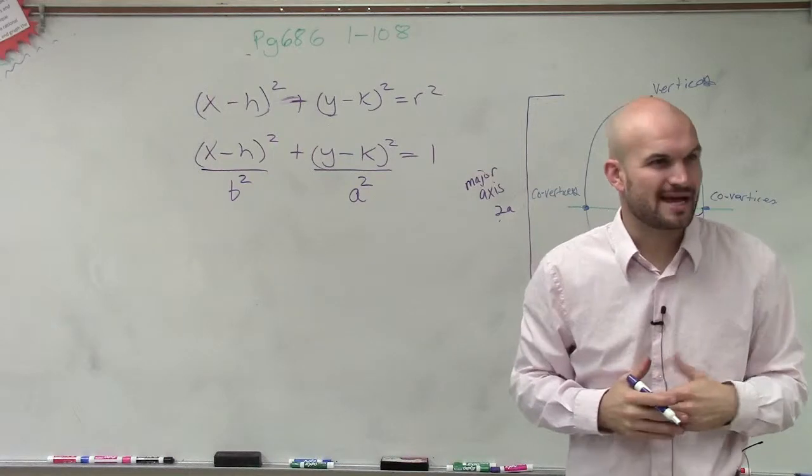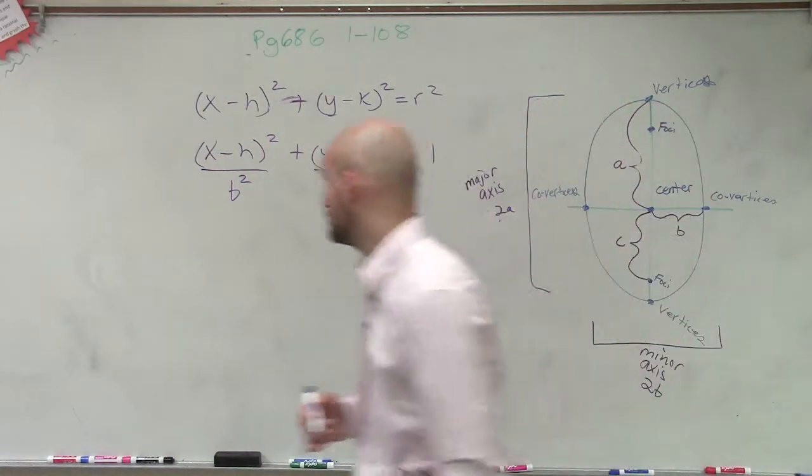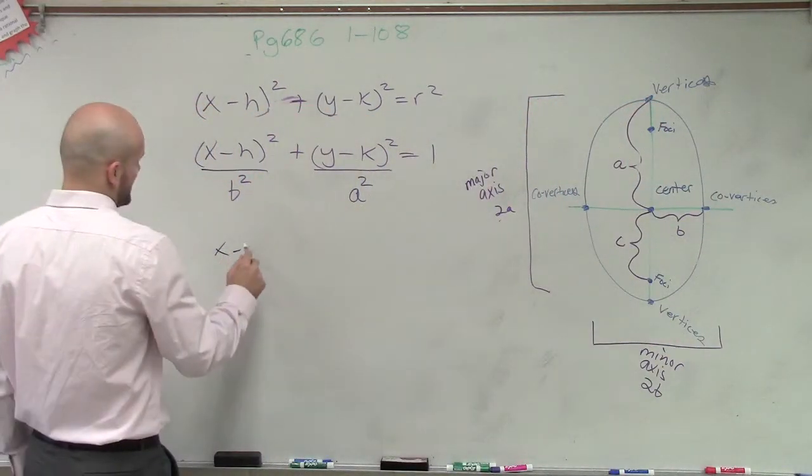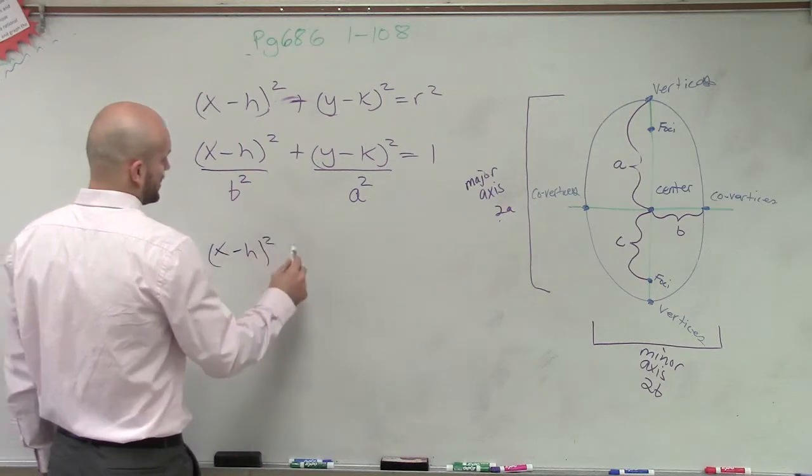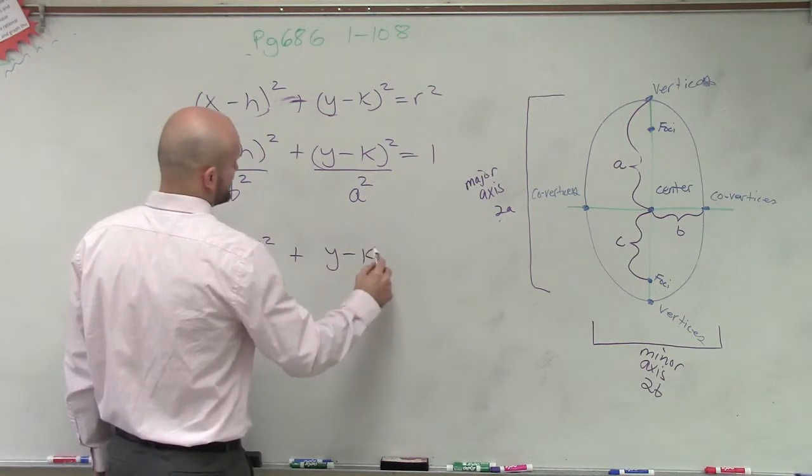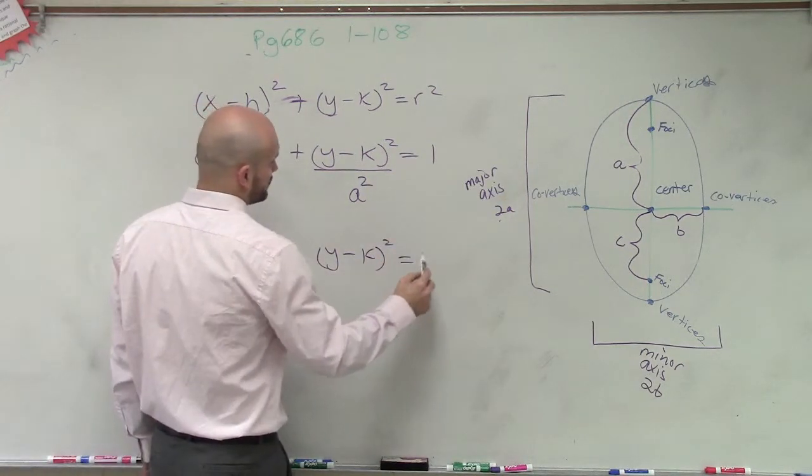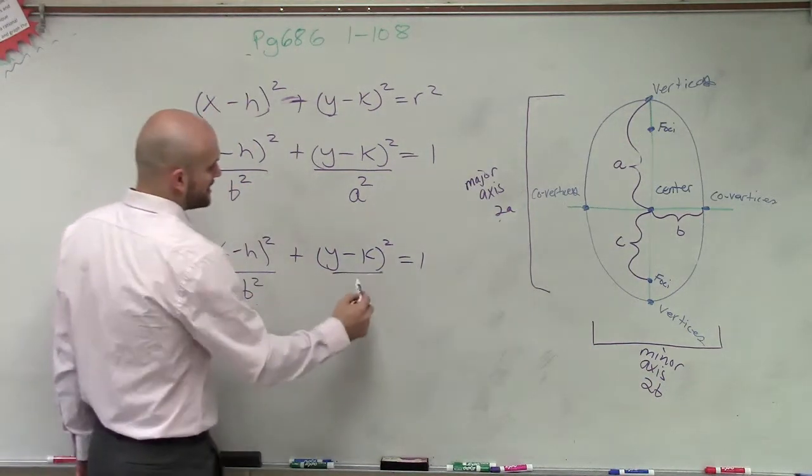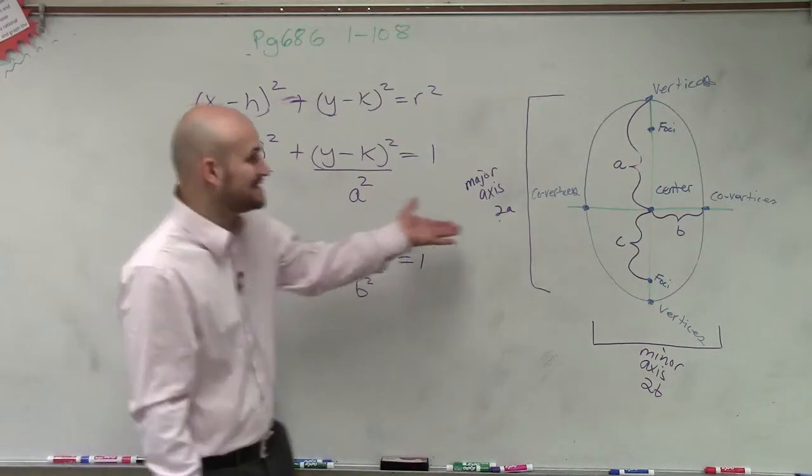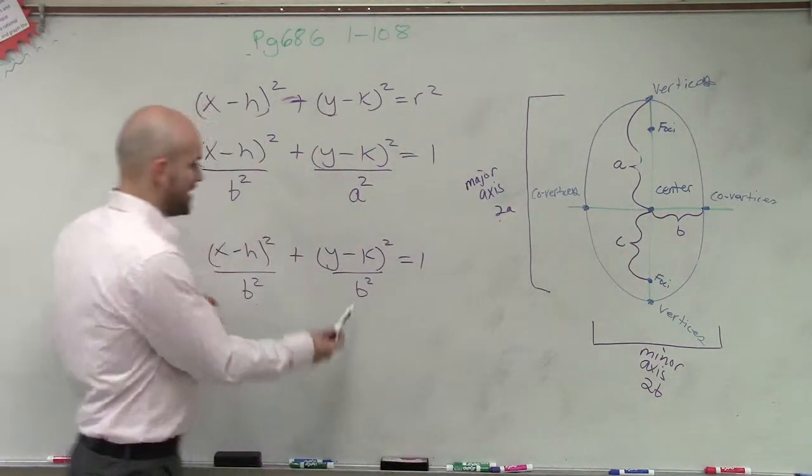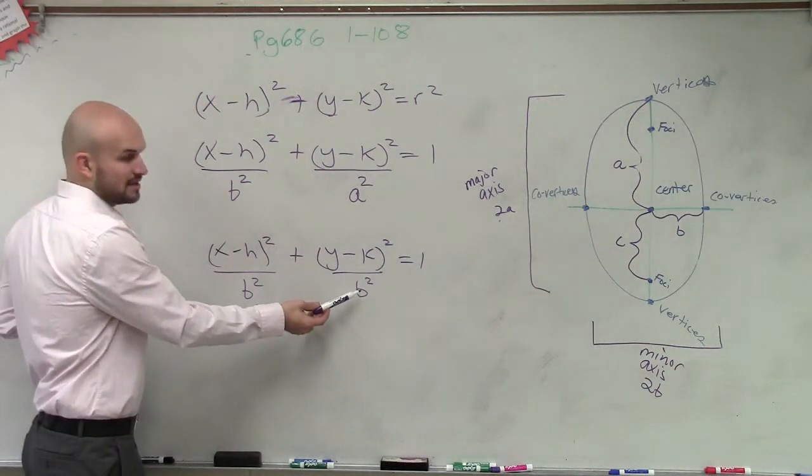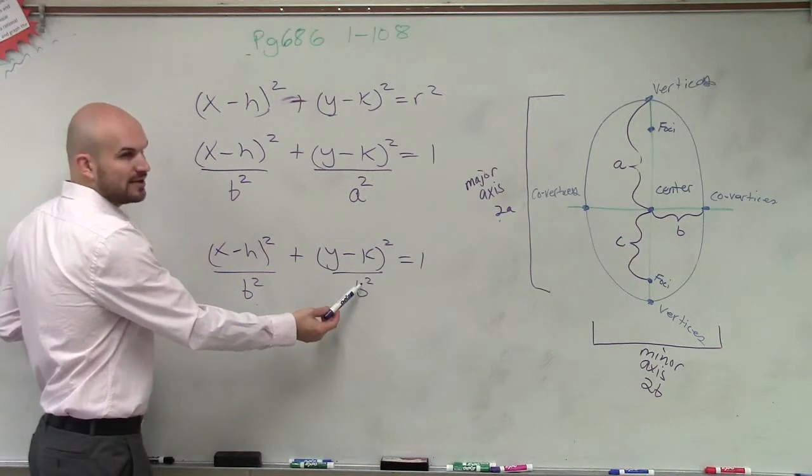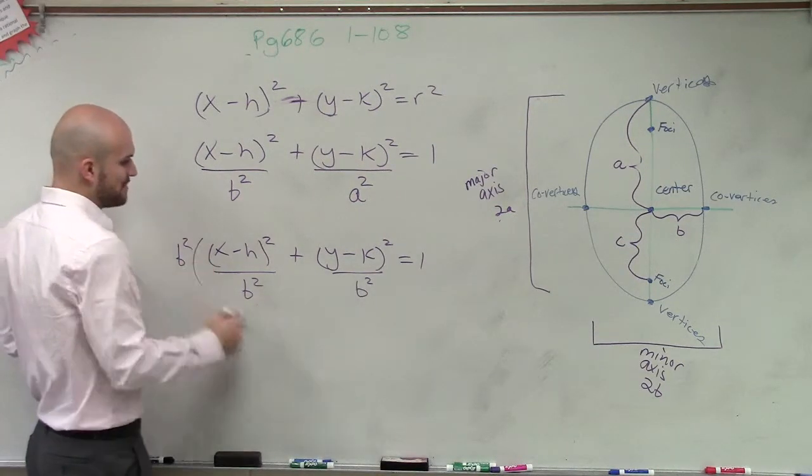Now, let me just go back to you and say, how is this the exact same thing as a circle? Let's say I did x minus h squared plus y minus k squared equals 1. And ladies and gentlemen, let's say that b squared is the same thing. Let's say these are equal. Well, how would I get rid of b squared? You'd multiply both sides by b squared.